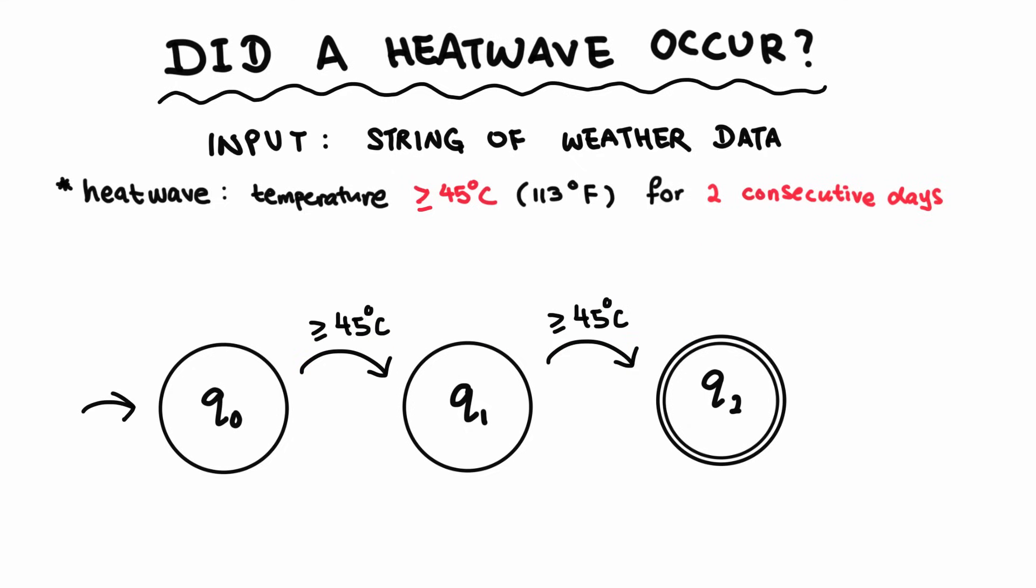And now to complete our machine, going back to our start state Q0, if the temperature is not over 45 degrees, we will remain in the same state. And if we are in state Q1, and the next temperature read drops below 45 degrees, then we will go back to our start state Q0, because for it to be considered a heatwave, temperatures must be over 45 degrees for two days in a row. And if we are already in our accept state Q2, we don't have to go anywhere, because a heatwave has already occurred.